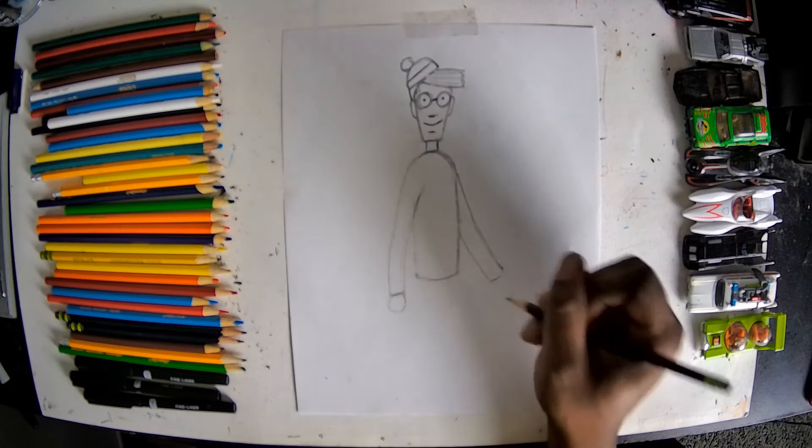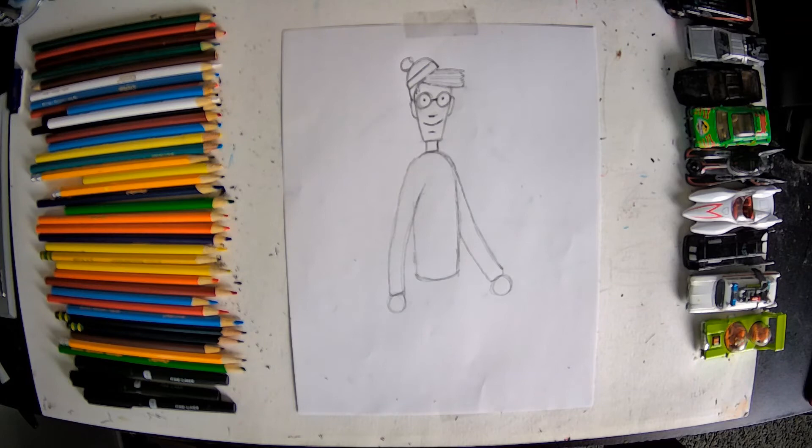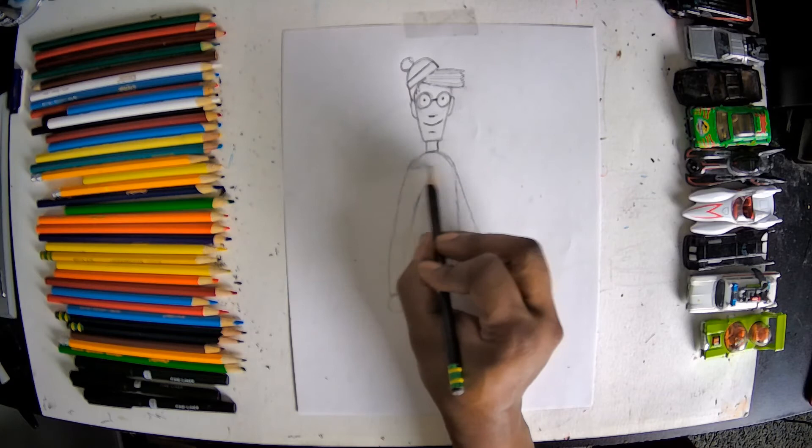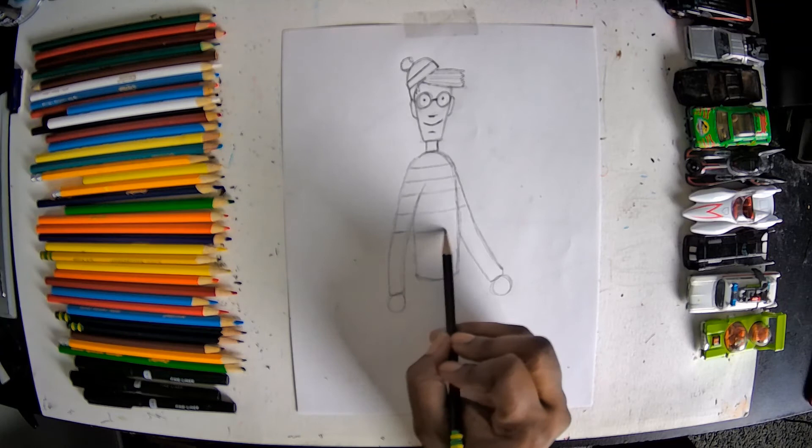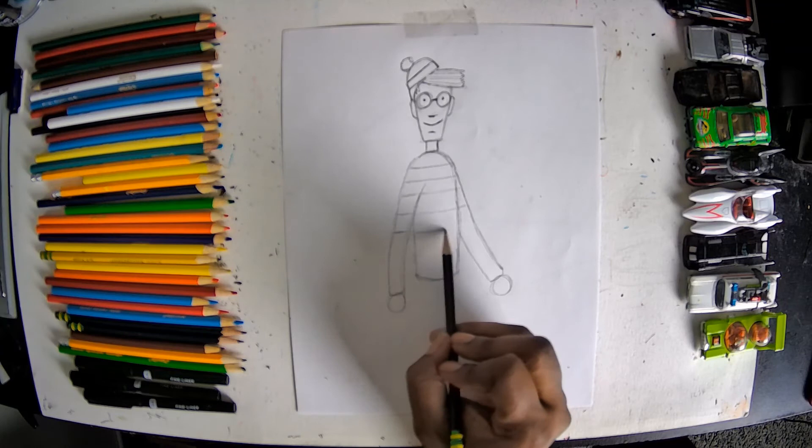I'm also gonna put a couple circles at the end of these, so I can build hands off of them. Now, while we're on the middle body of Waldo, I'm gonna make some lines across. I'm gonna start across the top shoulders here, and give some space, and make some more stripes. You'll notice the stripes go all the way across, so even if the arm is not connected, I kind of keep it in the same area.